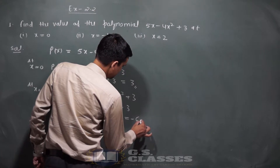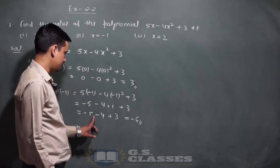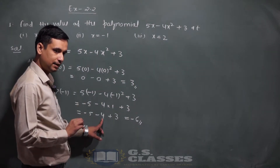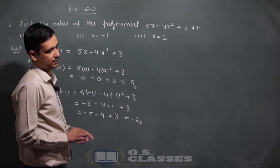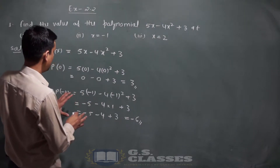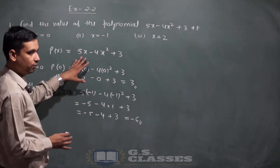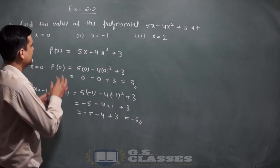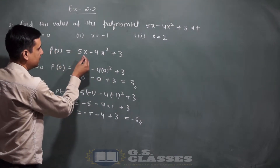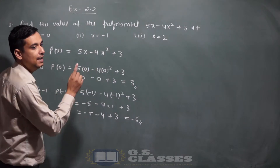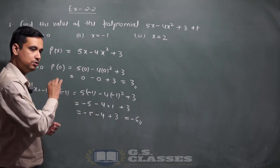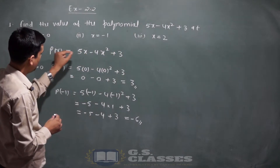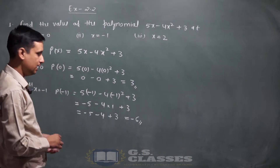Answer आ जाएगा minus 6। Concept यह है: हमें एक polynomial given है जो x का function है। जो variable use किया गया है वो x है। x की values given हैं: 0, minus 1, 2 — तो x की जगह वो value put करके simple solve करना है।